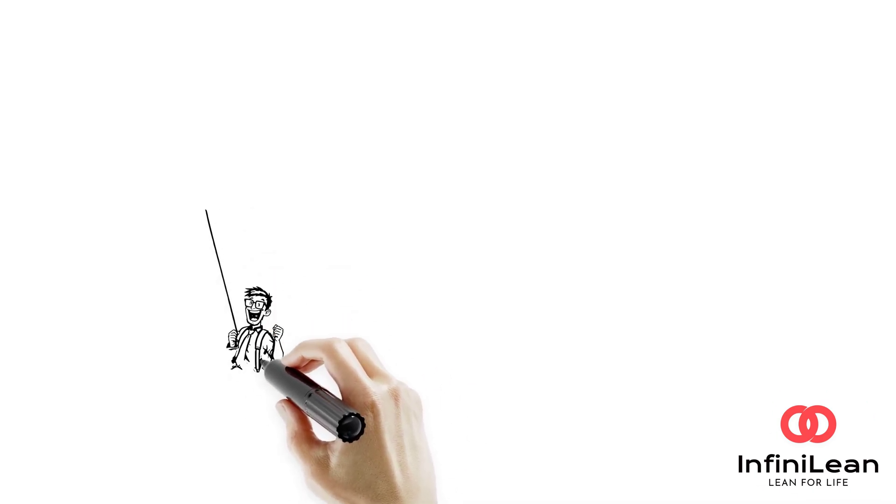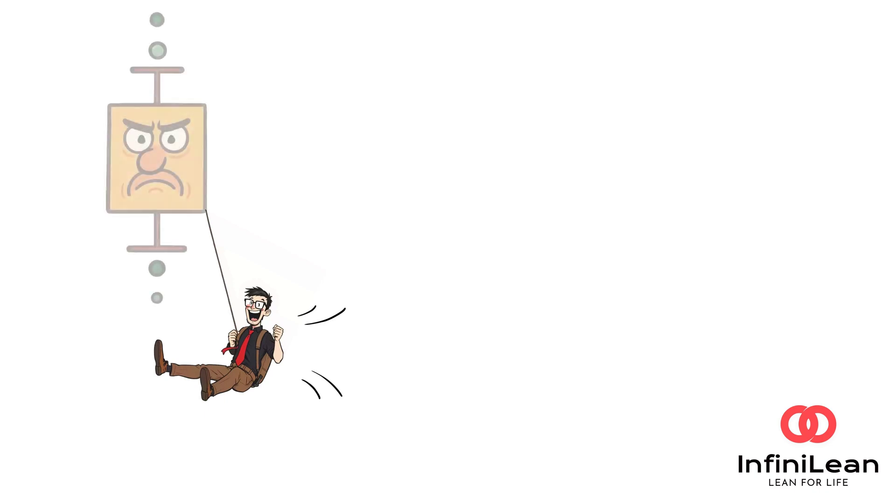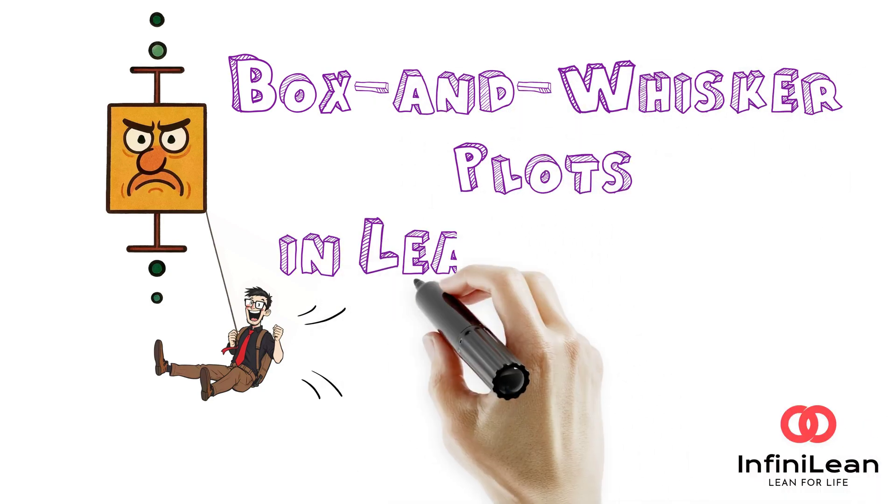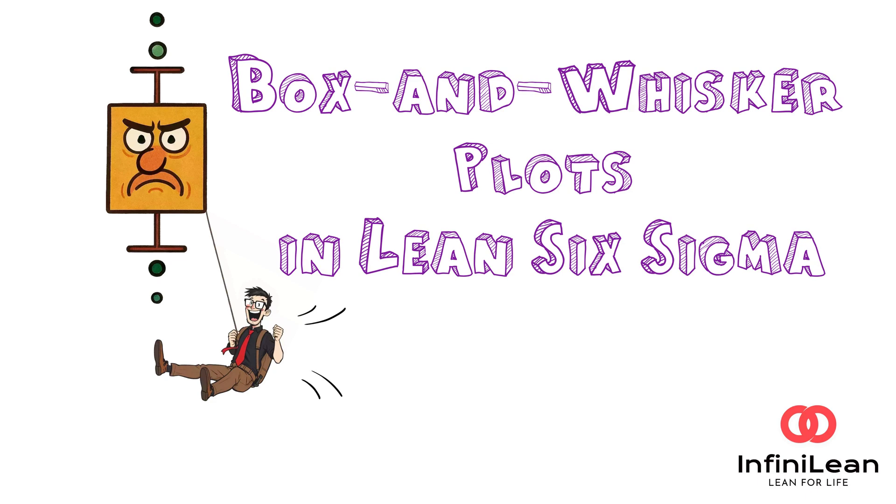Ever wondered how experts quickly visualize complex data in Lean Six Sigma? The secret weapon is the box and whisker plot. In this video, we'll unpack exactly how to create, interpret, and leverage these powerful visuals to drive process improvement.